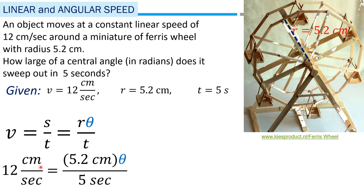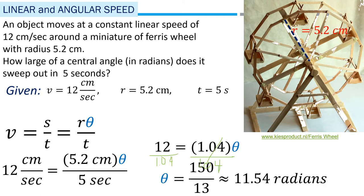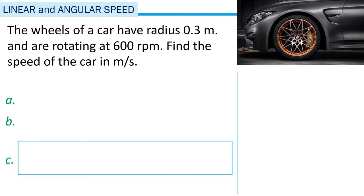Substituting: the speed is 12 centimeters per second, the radius is 5.2 centimeters, and the time is 5 seconds. So the distance s equals 12 times 5, giving 60 centimeters. Then theta equals s over r, so 60 divided by 5.2. Using a calculator, that gives 150 over 13, which is approximately 11.54 radians.